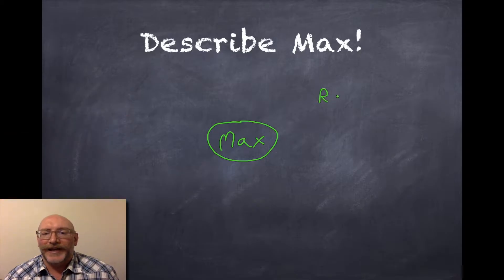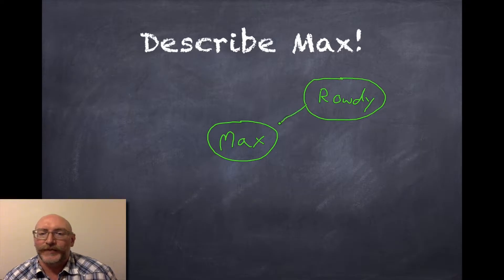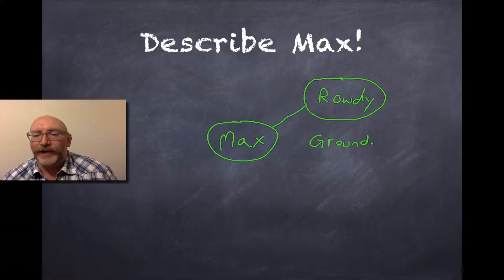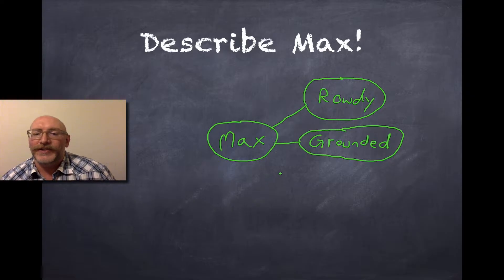Words that could describe Max, adjectives. One is rowdy. In the beginning of the book he is rowdy and rambunctious, and he gets sent to his room. And when he gets sent to his room, he is grounded. Now remember, I'm writing the word first and then I'm circling it. That helps it stay neat.